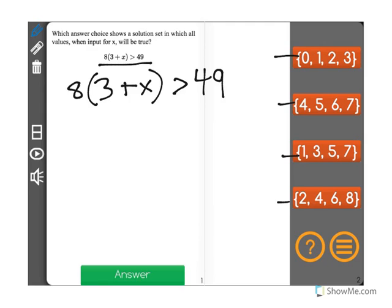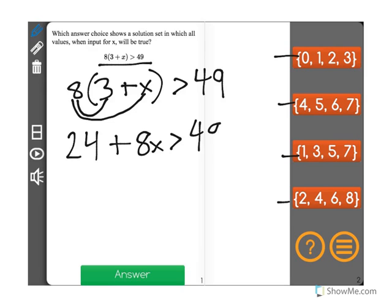Just like we normally would do, we're going to use the distributive property to first multiply 8 times 3 to get 24, and then 8 times x to get 8x. And as you can see, we're adding, so we're going to keep that addition sign. And it's still greater than 49.